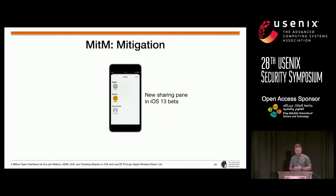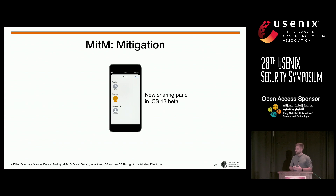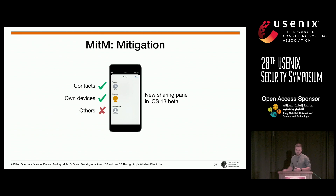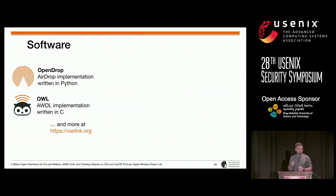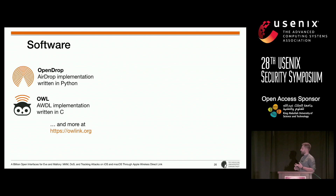For mitigation, in the new iOS 13 beta we've seen Apple rework the sharing pane. With the new design, it seems much easier to distinguish between authentic contacts, your own devices, and other unauthentic devices. To summarize: we reverse engineered both AirDrop and AWDL, implemented our own versions of them, and made them available on GitHub. There is also a small how-to for getting AirDrop running on a Raspberry Pi if you're interested. The code has already found its way into the security community, reportedly being used during Black Hat last week.